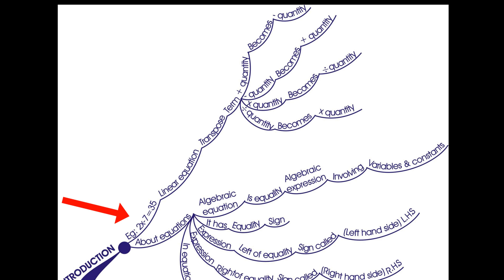If we transpose terms, plus quantity becomes minus quantity, minus quantity becomes plus quantity, multiplicative quantity becomes division quantity, and division quantity becomes multiplicative quantity.